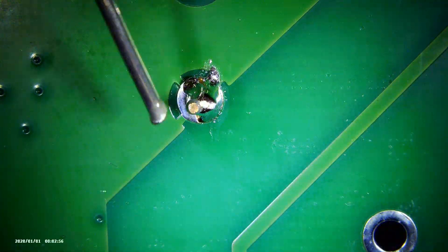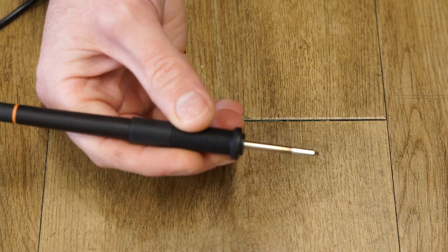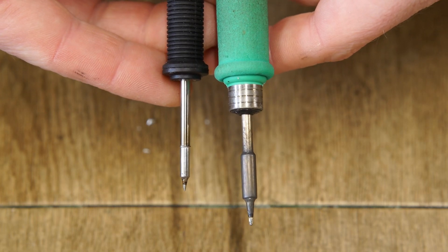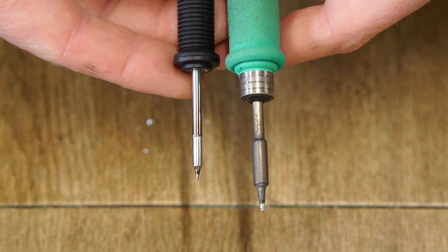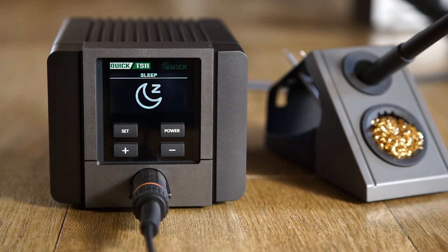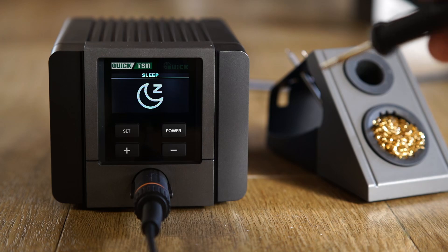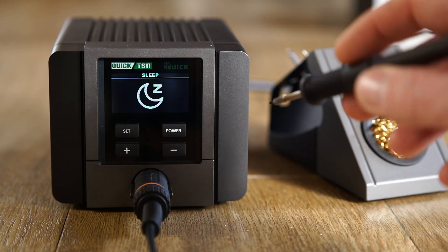One thing I particularly enjoyed about the TS-11 is the handpiece. It has one of the shortest grip to tip distances of any iron I've used, even beating the very popular JBC handpiece. When it comes to sleep mode, sometimes the station doesn't detect when I picked up the handpiece. However I found shaking the handpiece waked up the station.